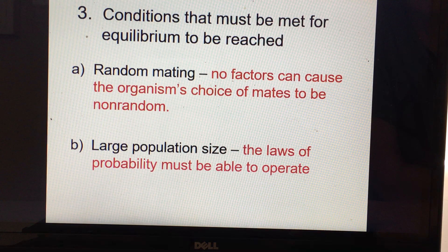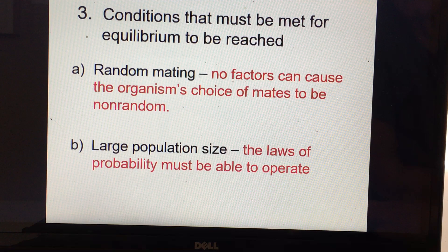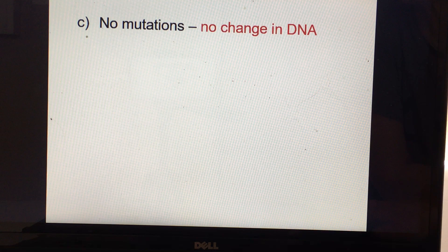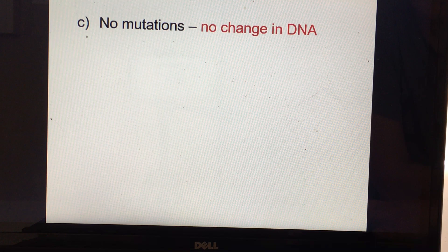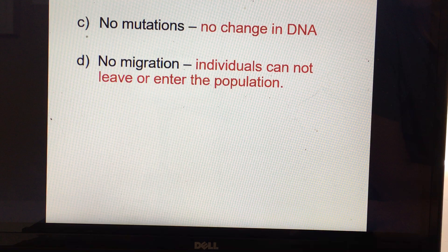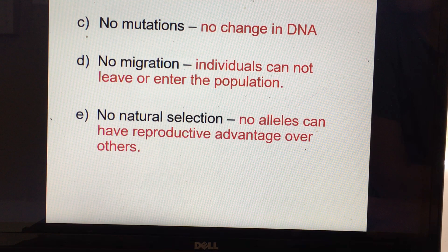You can't have any mutations — as soon as you have a mutation, the allele frequency has changed because you've added a new allele into that population. You can have no migration: individuals must not be leaving or entering your population. Anytime individuals leave or enter your population, you're shifting the allele frequencies in that population.